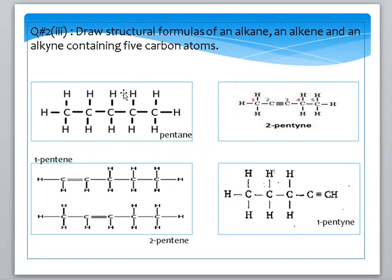Pentane has the formula C5H12. When we talk about pentene, there are different structures possible. If the double bond is on the first carbon, it is 1-pentene. If it is on another carbon atom, it is 2-pentene.